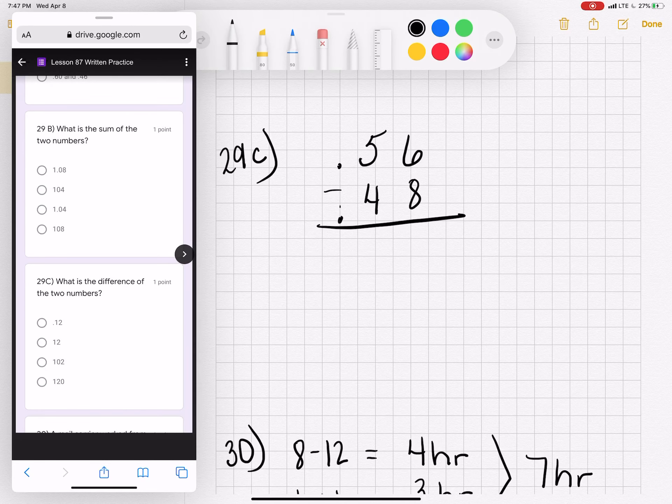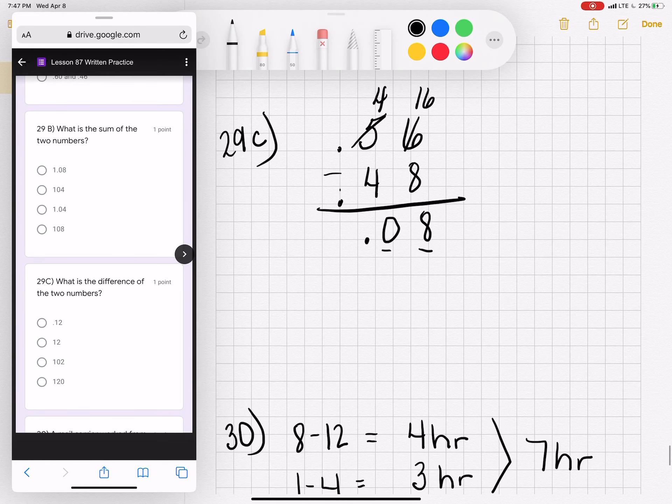When you subtract, make sure you put the largest number on the top. Mark out the five. Five becomes a four. The six becomes a 16. 16 minus eight is eight. But don't just say this is eight. Four minus four is zero, which is very important. And then put your decimal. Because eight hundredths is different than eight tenths. Eight pennies is a very different value than eight dimes.